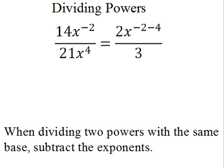We've got 2 powers that we're dividing: x to the negative second and x to the fourth. So when dividing powers with the same base, you just subtract the exponents. I'm going to change that to x to the negative second minus 4. Also notice that I've simplified 14 over 21 to 2 thirds by dividing out a common factor of 7.